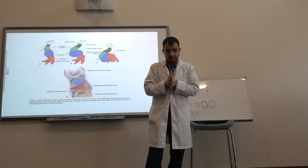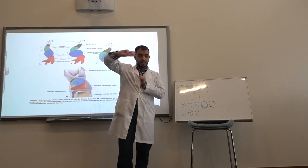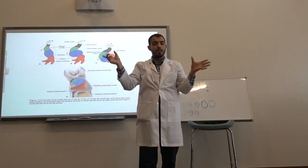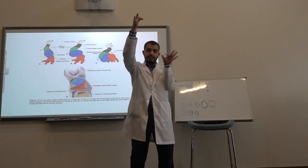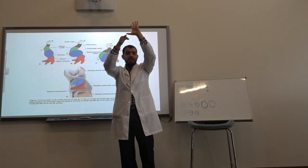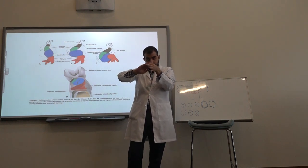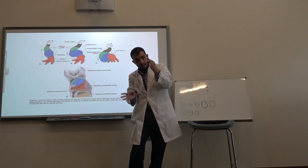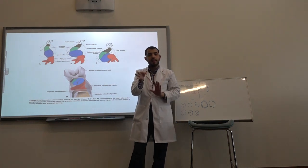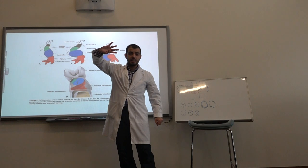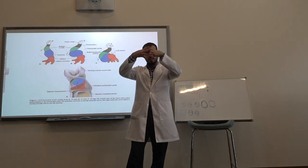This tube will then develop three constrictions and four dilations. One constriction near the cranial end, one in the middle, and one inferior. Above each constriction there is a dilation, and under each constriction there is a dilation, giving us four dilations total and three constrictions.